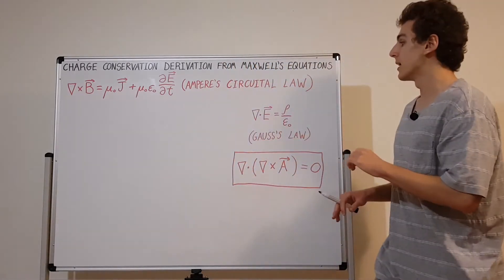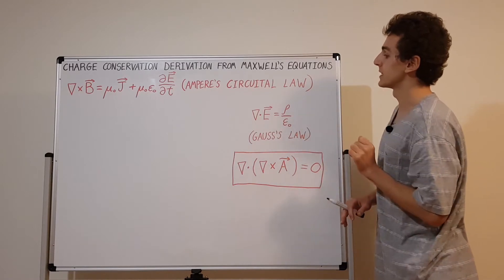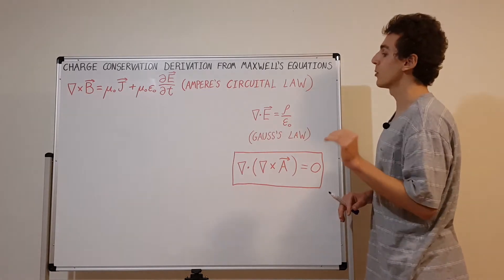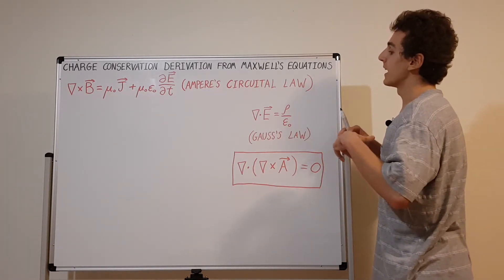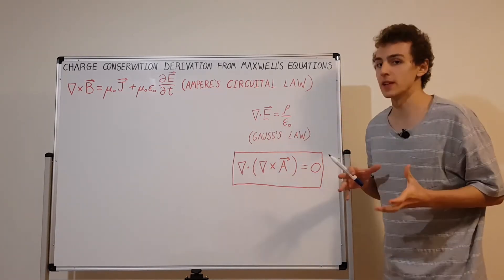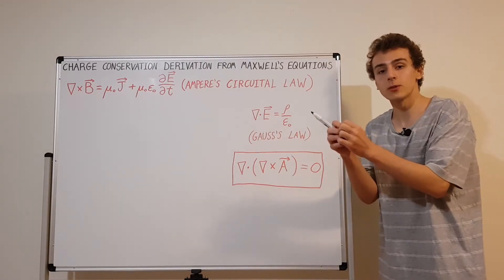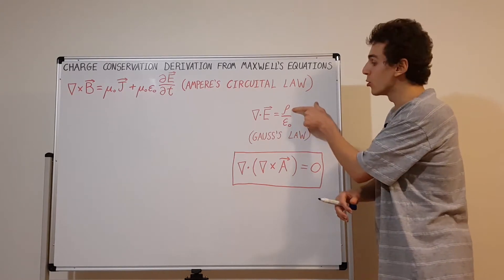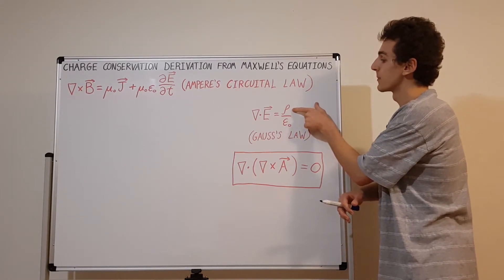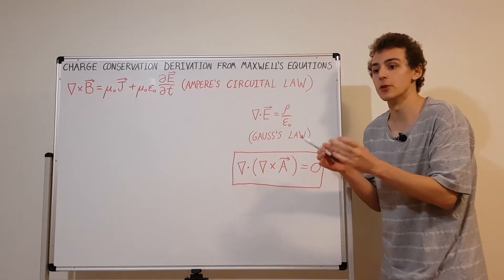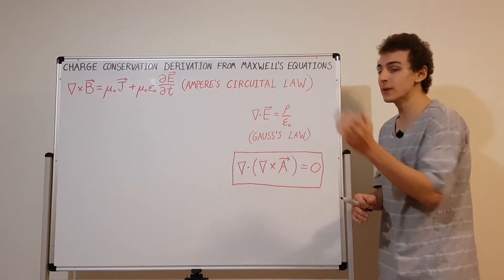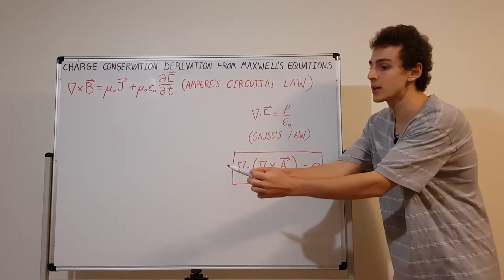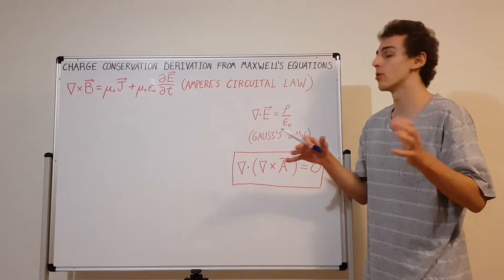The other equation is Gauss's law, usually the first law written in Maxwell's equations. It describes the divergence of the electric field: if there's an electric field coming out of a point, there has to be some kind of charge density. Rho is the charge density — how densely the charges are packed. The divergence tells you how the electric field comes out of any point in space.